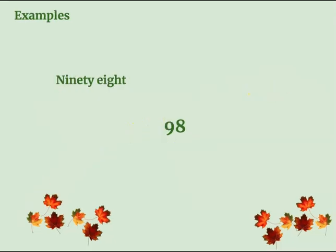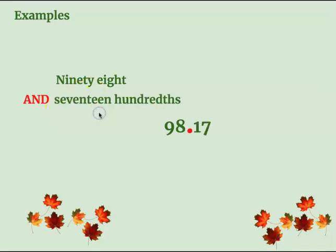Now for our next example. Here we have 98 written in word form and in standard form. 98 and — remember 'and' is our decimal — tells us that we're going to have numbers after the decimal. 98 and 17 hundredths. The number ends in the hundredths place.